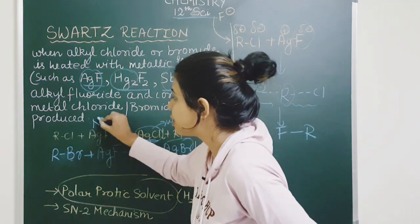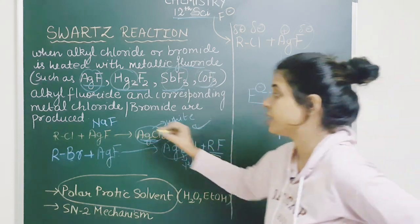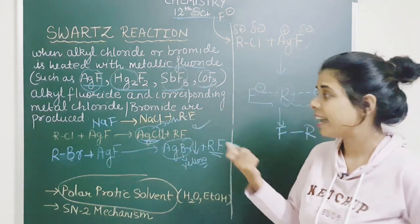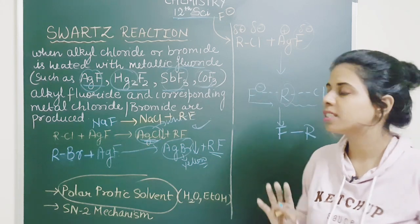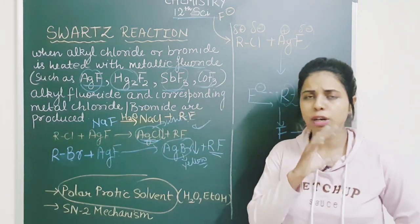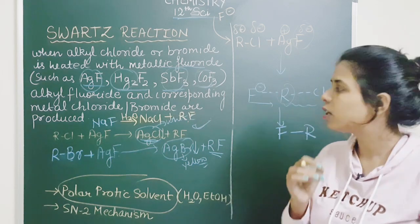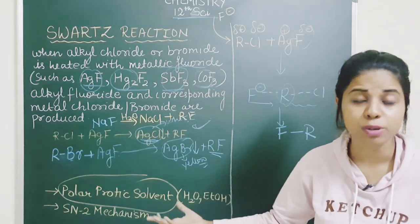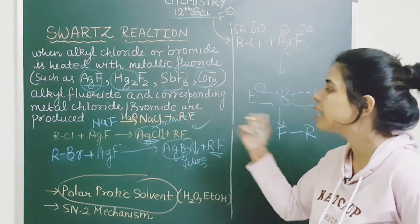Now we have the answer to why we chose AgF. But what if we used NaF instead? If I take RCl plus NaF as a consideration: in a polar protic solvent like water, you would get NaCl and RF. The problem is that NaCl is soluble in water and RF is also soluble in water. So both products remain in solution, equilibrium is readily attained, and the reaction rate slows down — the reaction does not efficiently proceed toward the product.